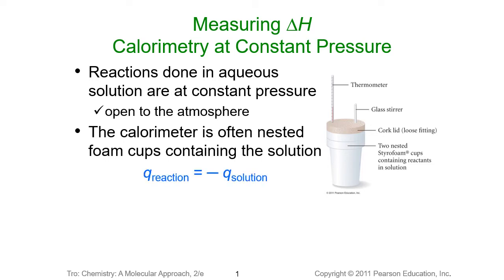We do use Styrofoam cups, and when we do our calculations, it's very hard to measure the chemical reaction directly — that would have to be done at the molecular scale. It is pretty easy, however, to measure the water surrounding that chemical reaction. So when we're doing coffee cup calorimetry, we are measuring the heat of the solution and calculating the reaction. The heat the solution absorbs comes from the chemical reaction, and that's why we have a negative sign in front.